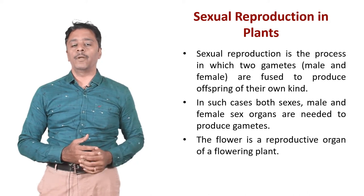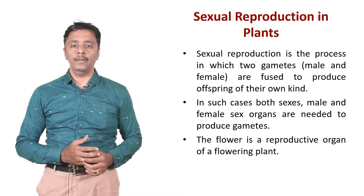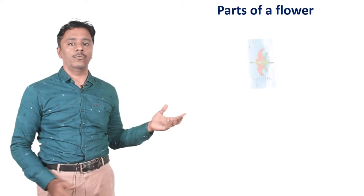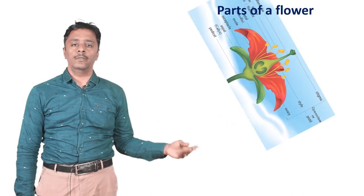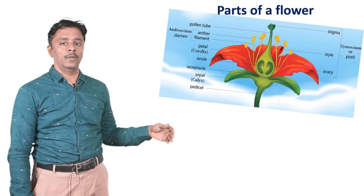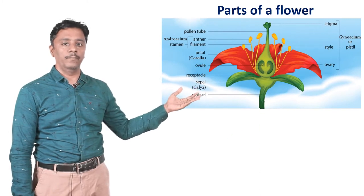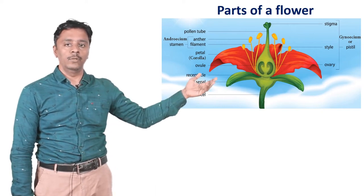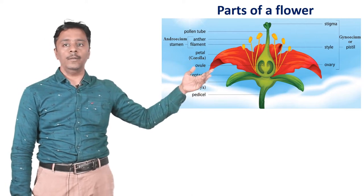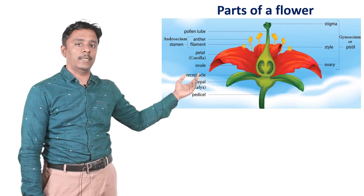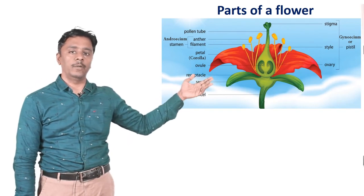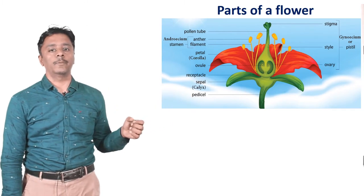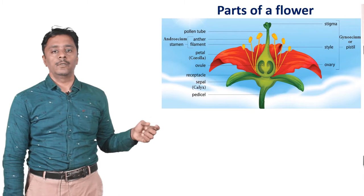We are going to see a clear picture of the flower and what are the parts of the flower. The parts are: pedicle, sepal, ovary, ovule, stigma, petal which is also called corolla, and androecium, which is an important part of the flower. The important parts of the flower will be asked in the question paper.